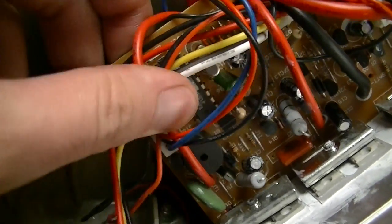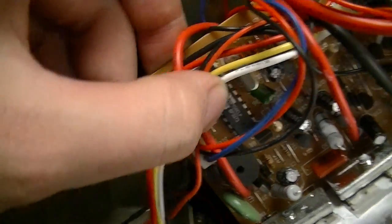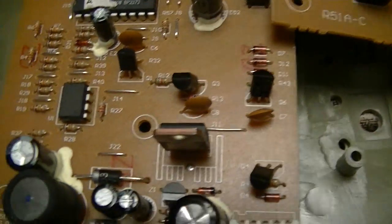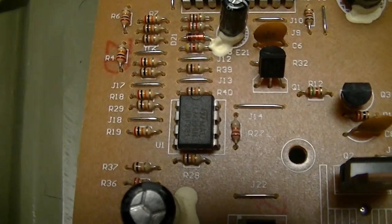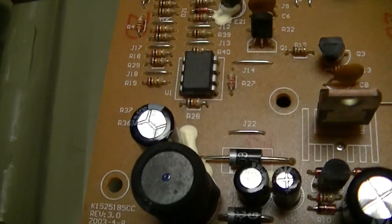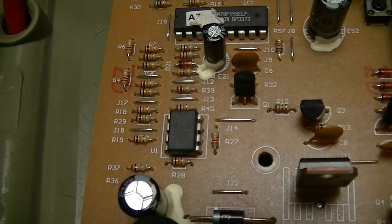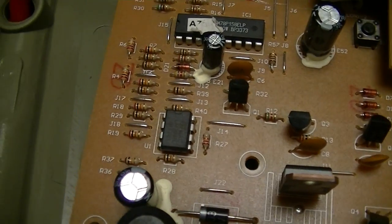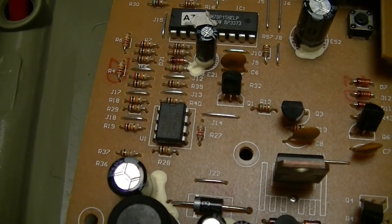There's another microcontroller in the inverter board which I'll get to in a second, and that has a 78L05 powering it. It's the exact same microcontroller part number. There's an LM393 comparator which is most likely handling things like output potential or low potential disconnect or charge management or something of that nature.